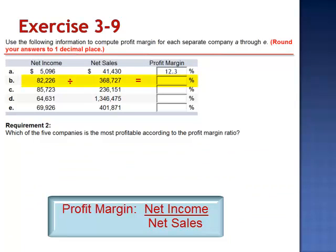Company B: 82,226 divided by 368,727. The profit margin is 22.3%.